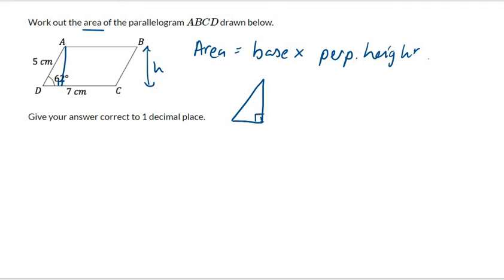We don't know how wide the base is, but we do know the hypotenuse. Let's just sketch that out. So we know that the hypotenuse there is 5 centimeters, and we know the angle is 62 degrees. And what do we need? We need this height. So let's label that with opposite, adjacent, and hypotenuse. Hypotenuse is the longest side, which is opposite the right angle. Opposite the angle, we have the height, and adjacent to the angle, we've got nothing.